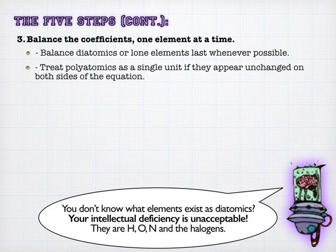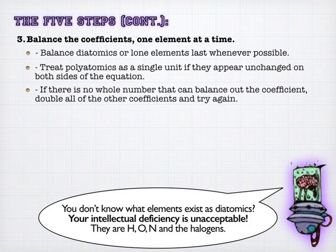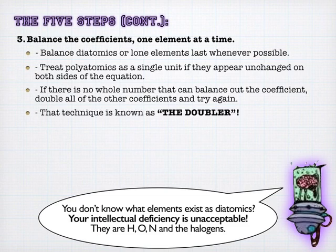Polyatomics, if they show up on both sides, treat as a single unit. And we'll see this a little later. But if you have sulfate on both sides, just balance the sulfates out. Instead of trying to break it down into the separate elements, it makes it a lot easier. And then finally, when you get down to the last one, if there's no whole number that balances it out, double all your other coefficients and try again. Usually that'll work, and I call that the doubler technique. And you have to say that with a very deep voice. You have to go, the doubler, when you use the doubler.